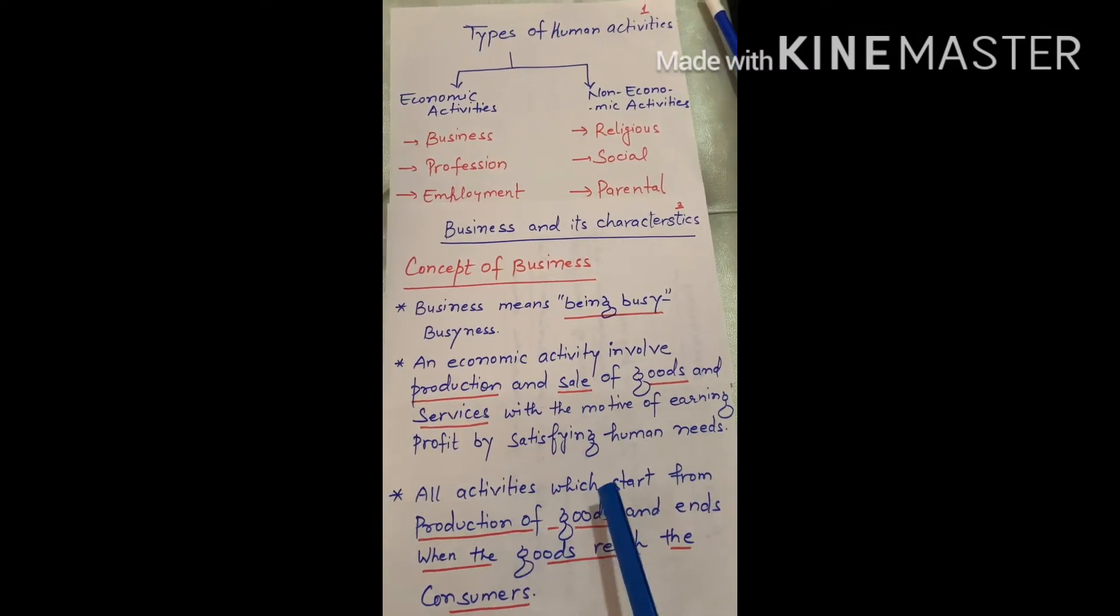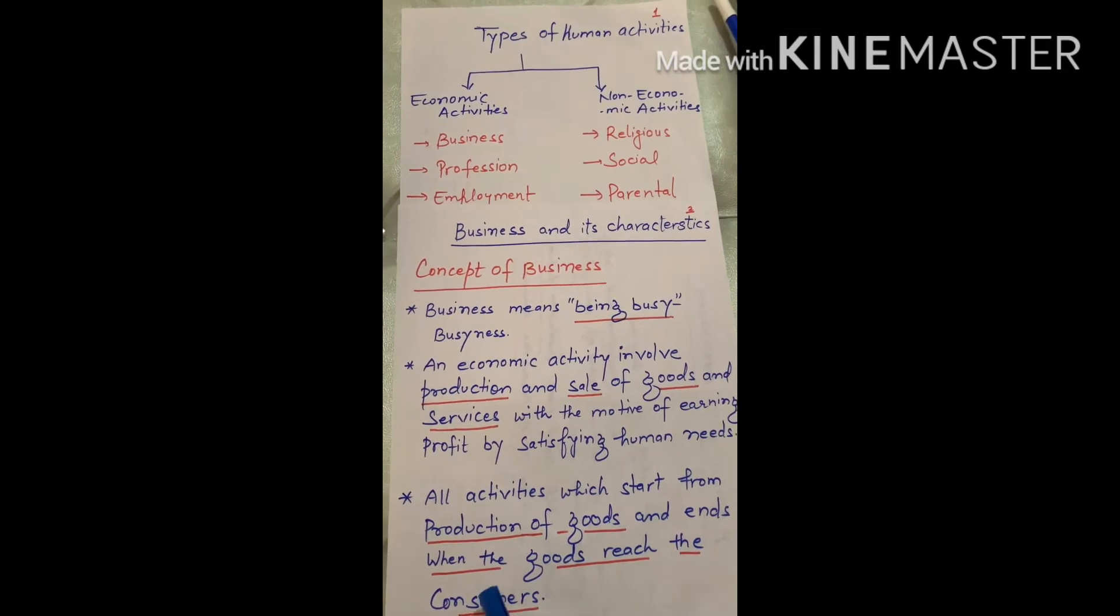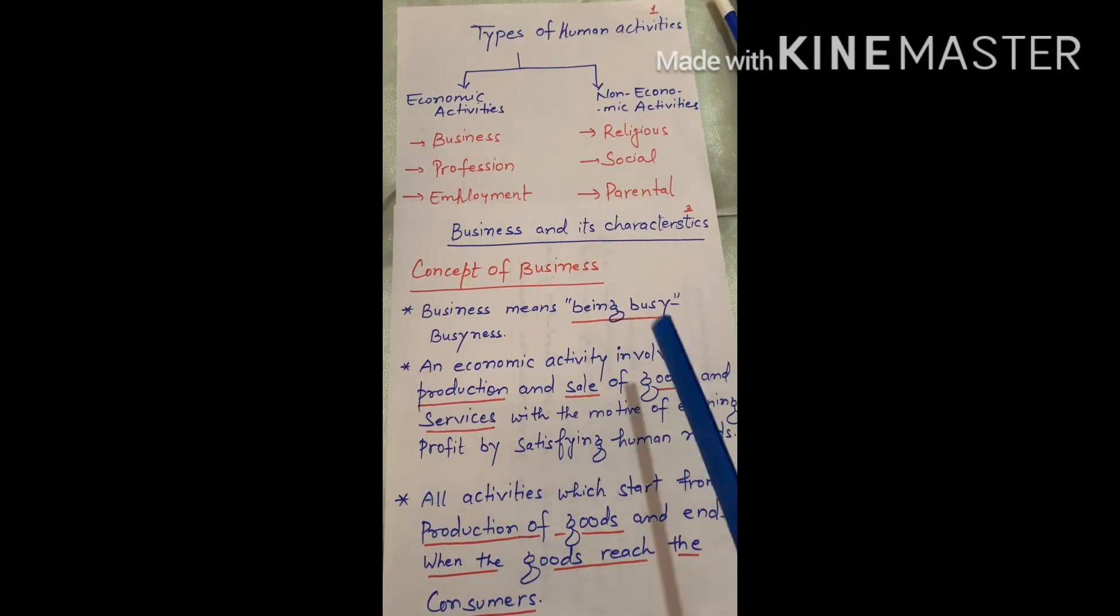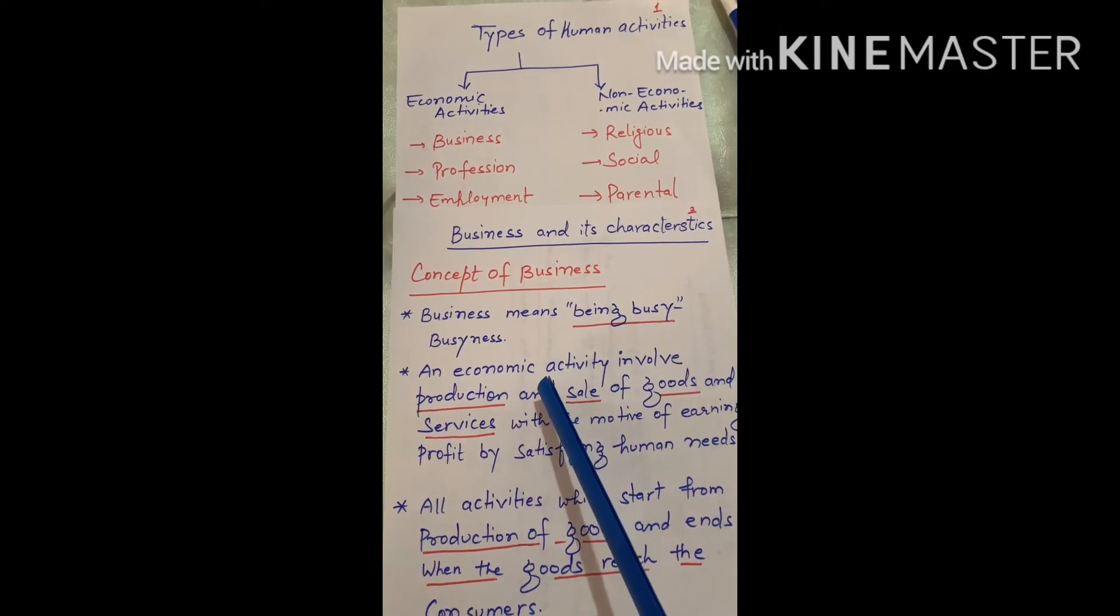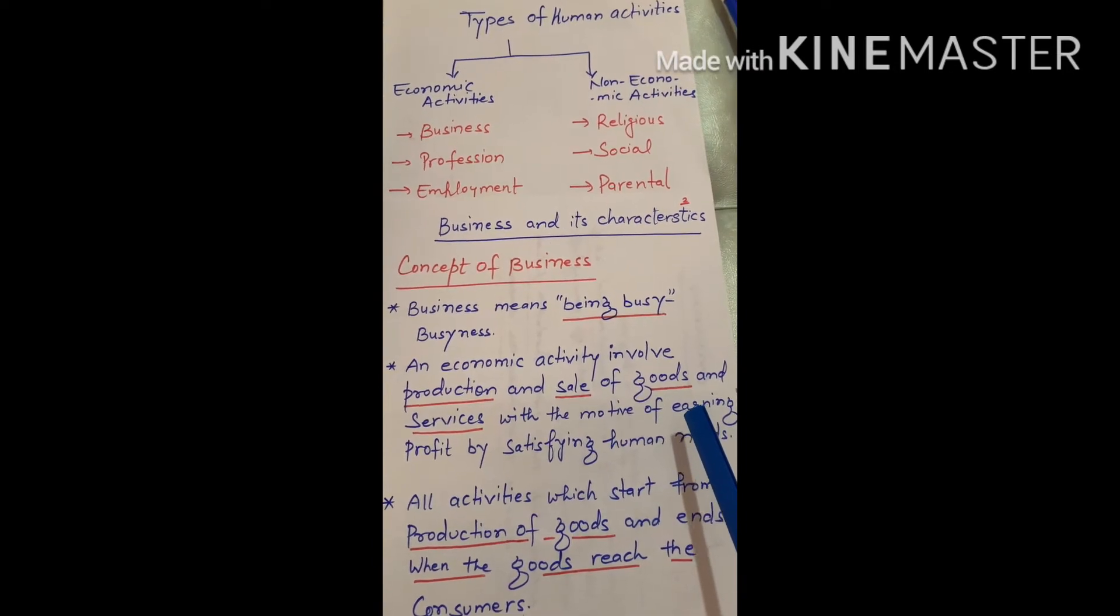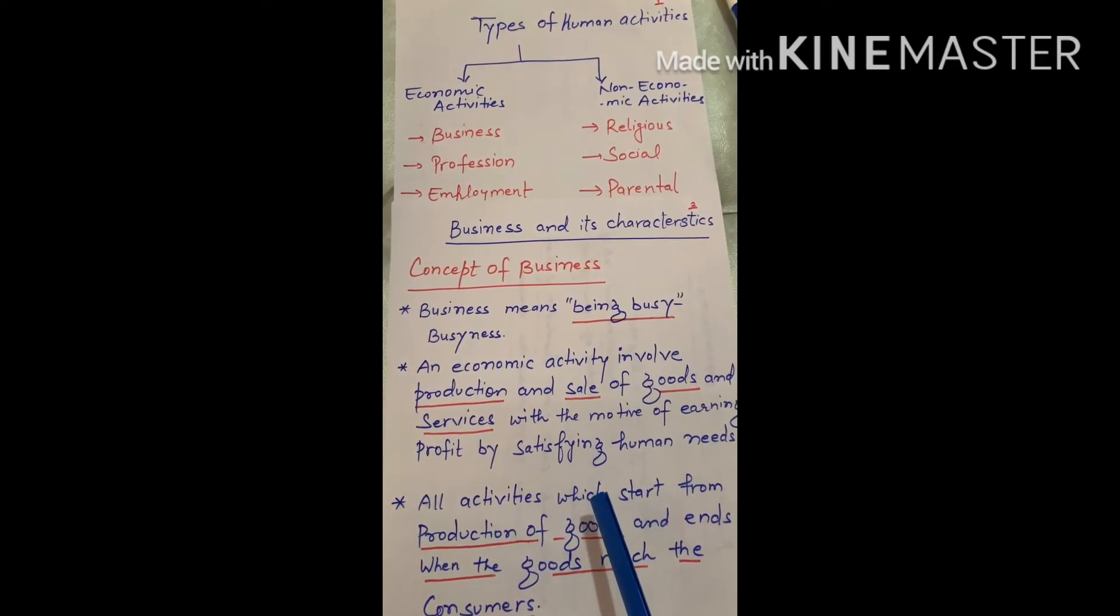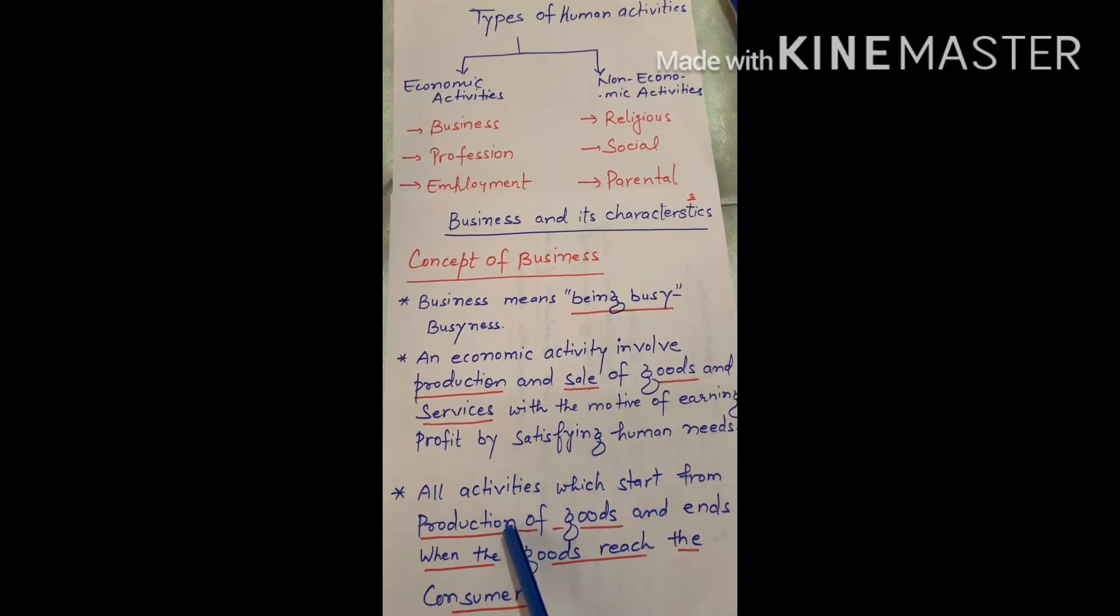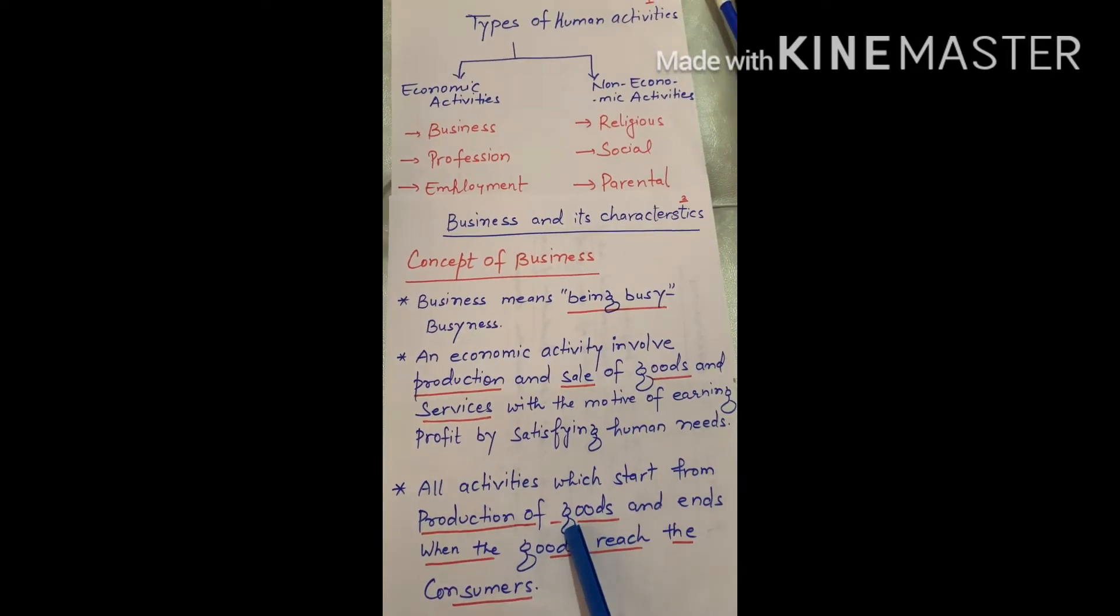All activity will start from production of goods and ends when the goods reach the consumer. Business is what we do when we produce goods or purchase and sell to earn profit. This is the meaning of business.